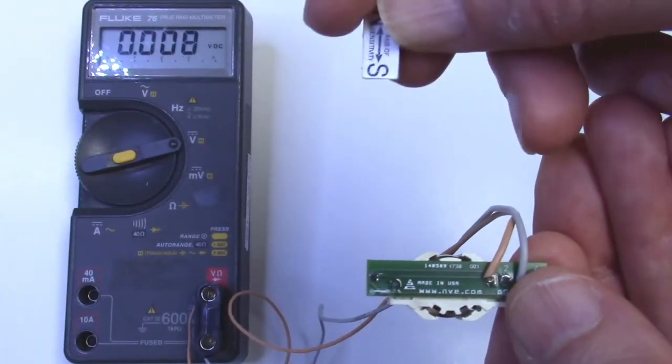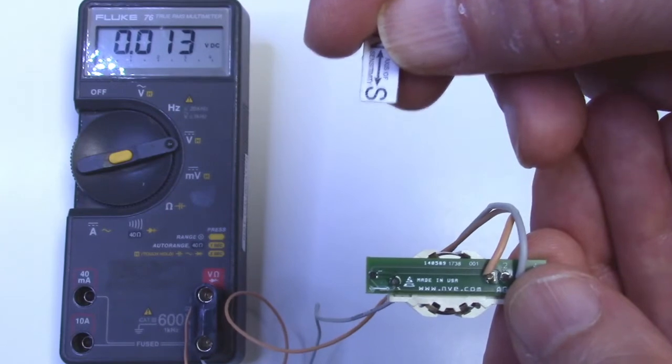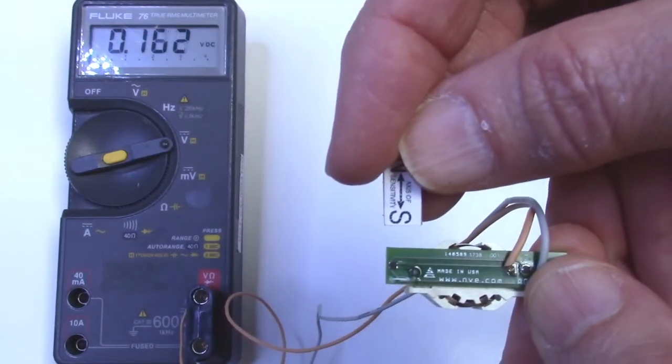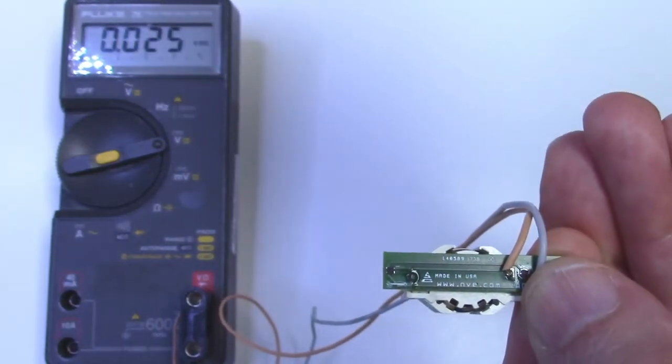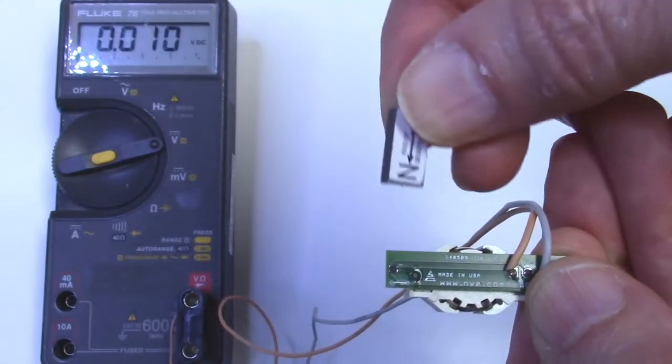We can detect a small magnet more than 50 millimeters away and full scale is nearly 400 millivolts per volt, remarkable for a passive component. We can sense polarity as well as field strength.